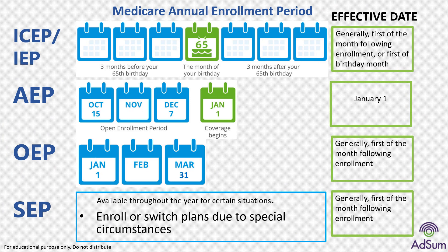The enrollment period when you turn 65 is called the Initial Coverage Election Period (ICEP) or Initial Enrollment Period (IEP). You have three months before your 65th birthday, your birthday month, and three months after to enroll. For Medicare Advantage, you can make changes to your plans during AEP — Annual Enrollment Period — which is October 15th to December 7th. If the plan selected during AEP is not fitting, you can make changes during the open enrollment period, January 1st to March 31st. Throughout the year, you can also enroll or switch plans due to special reasons, such as loss of employer coverage, moving out of a service area, or other qualifying events.